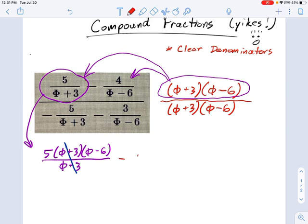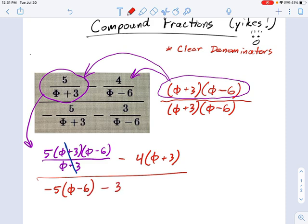Now, the top right fraction cancels out its phi minus 6, and all you have left is 4 times phi plus 3. And then we have a big denominator. And on the bottom, you have negative 5 times phi minus 6, and negative 3 times phi plus 3. Okay,